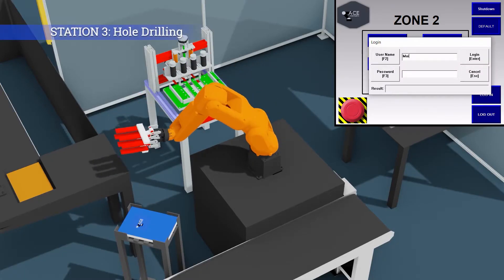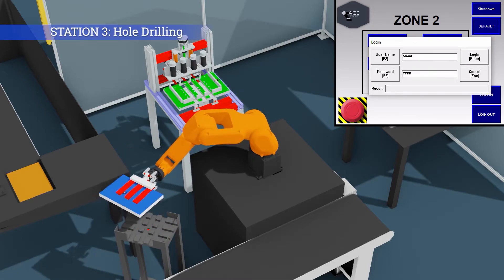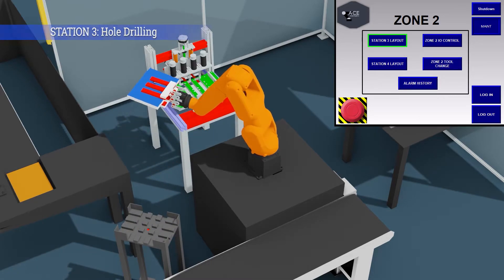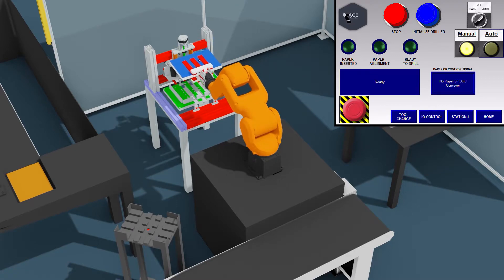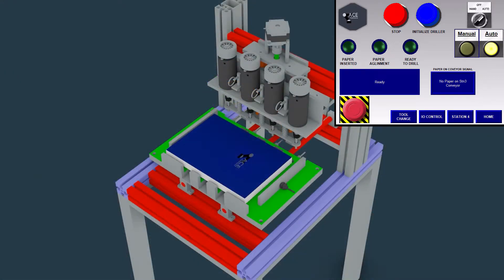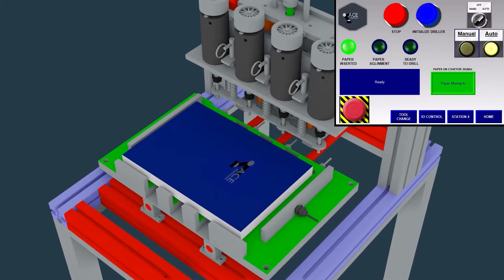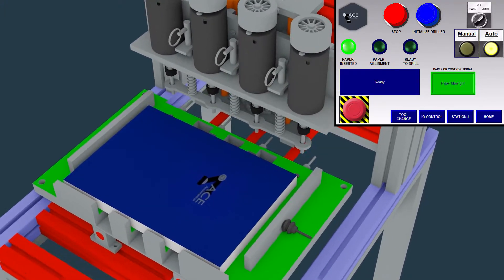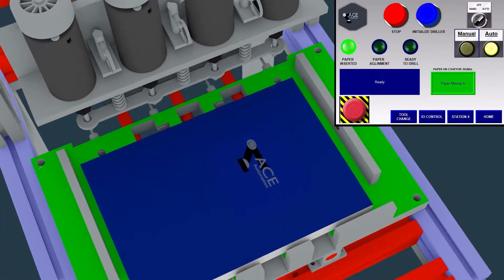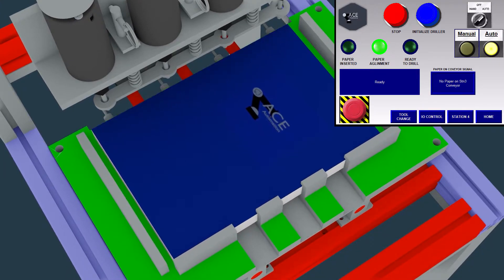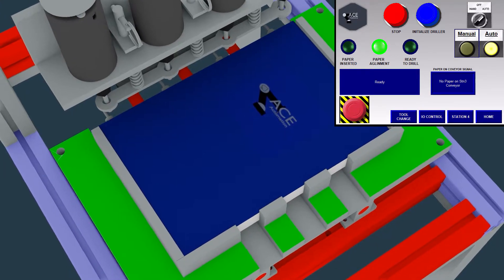At station three, the Cognex robot picks up the stack and places it at the drilling machine. Here, the stack becomes aligned and the machine proceeds to drill four equally spaced holes for the clips. This process is indicated on the HMI.